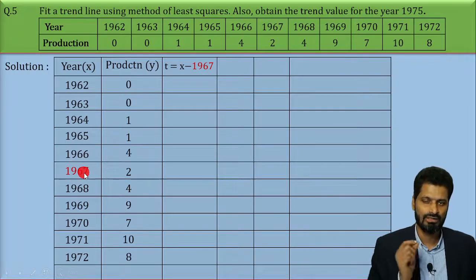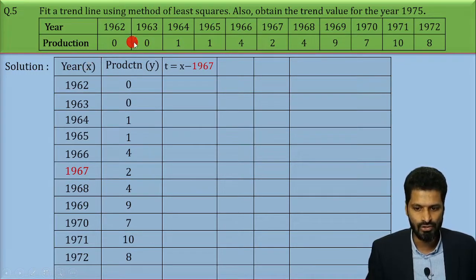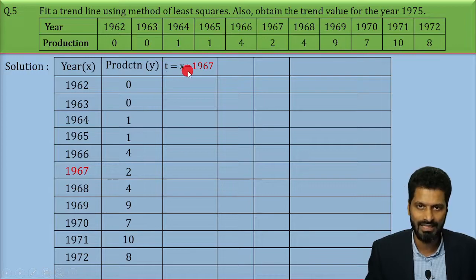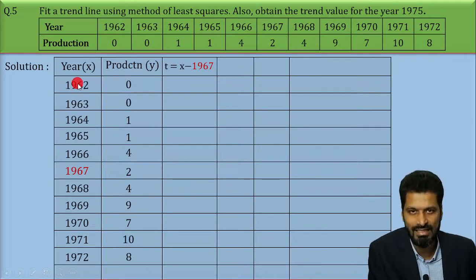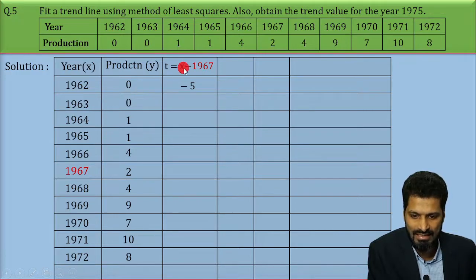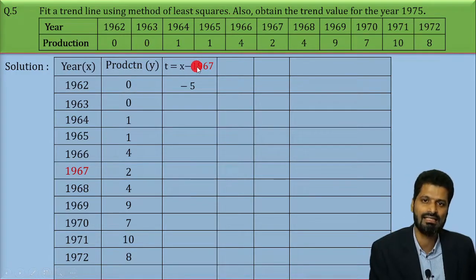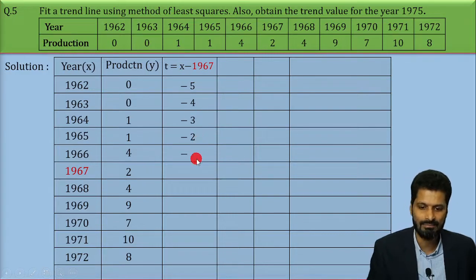Whenever you have odd observations and need to use the least square method, t will be x minus the central most value. For the first value x = 1962: 1962 minus 1967 = minus 5. Next, 1963 minus 1967 = minus 4. Then 1964 minus 1967 = minus 3. Likewise we get minus 2, minus 1, 0, 1, 2, 3, 4, and 5.